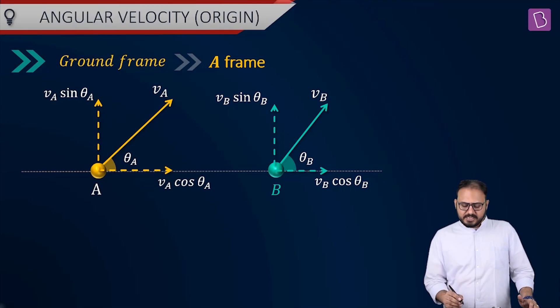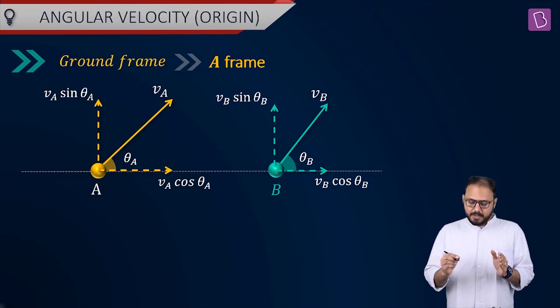So, if you ask me what is the velocity va vector? It is va cos theta a i-cap plus va sin theta a j-cap. What is velocity vb? Vb cos theta b i-cap plus vb sin theta b j-cap. So far, is there any problem? No.